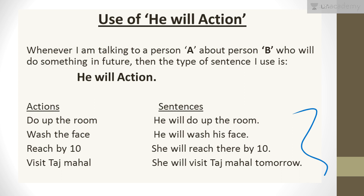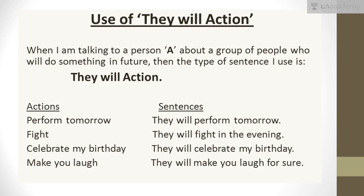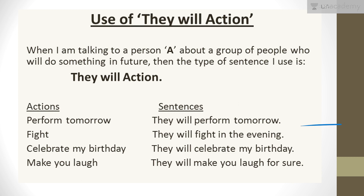Now coming on to use of 'they will action'. When I am talking about a group of people who will do something in future, the type of sentence I use is 'they will action'. For example, if the action is perform tomorrow — say we are going to have an event and discussing whether they will perform — and I have strong confirmation that yes, they will, I would say 'they will perform tomorrow'. If the action is fight, I would say 'they will fight in the evening'.